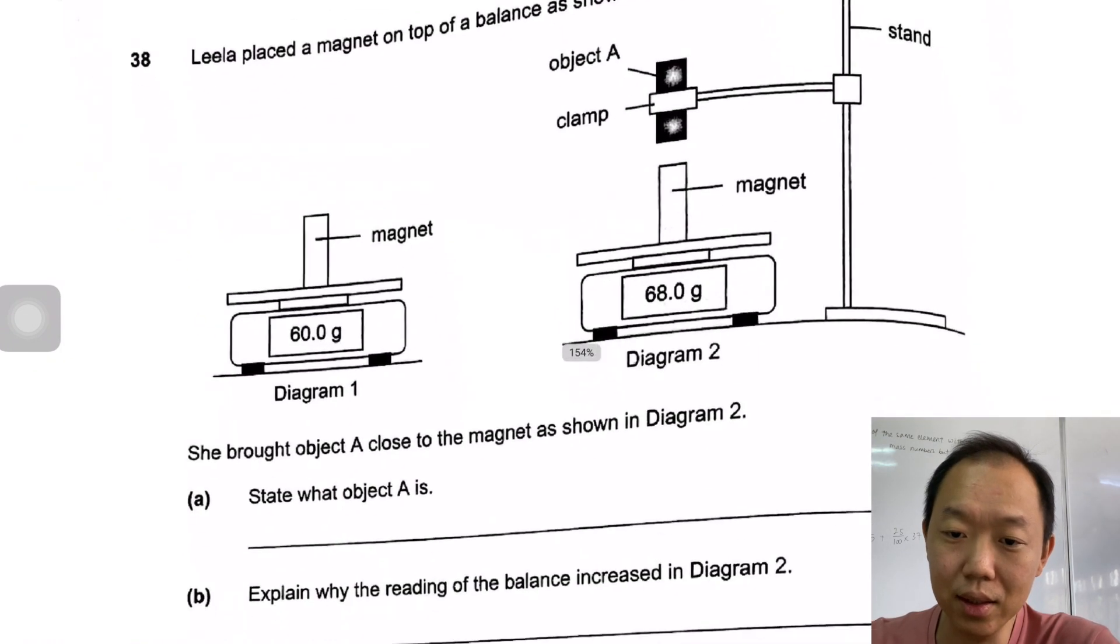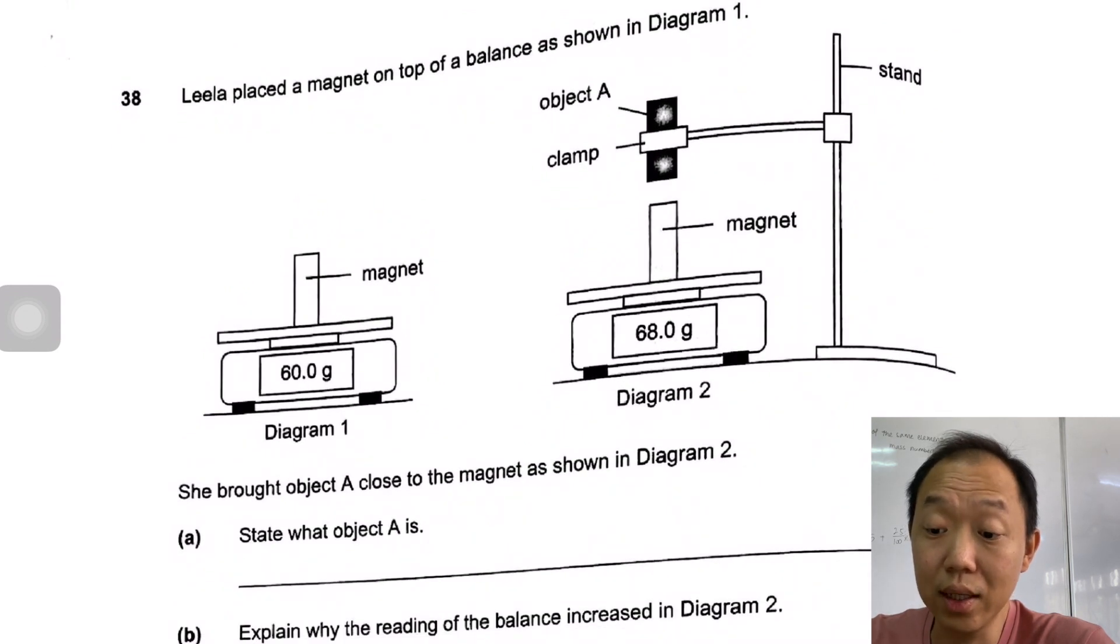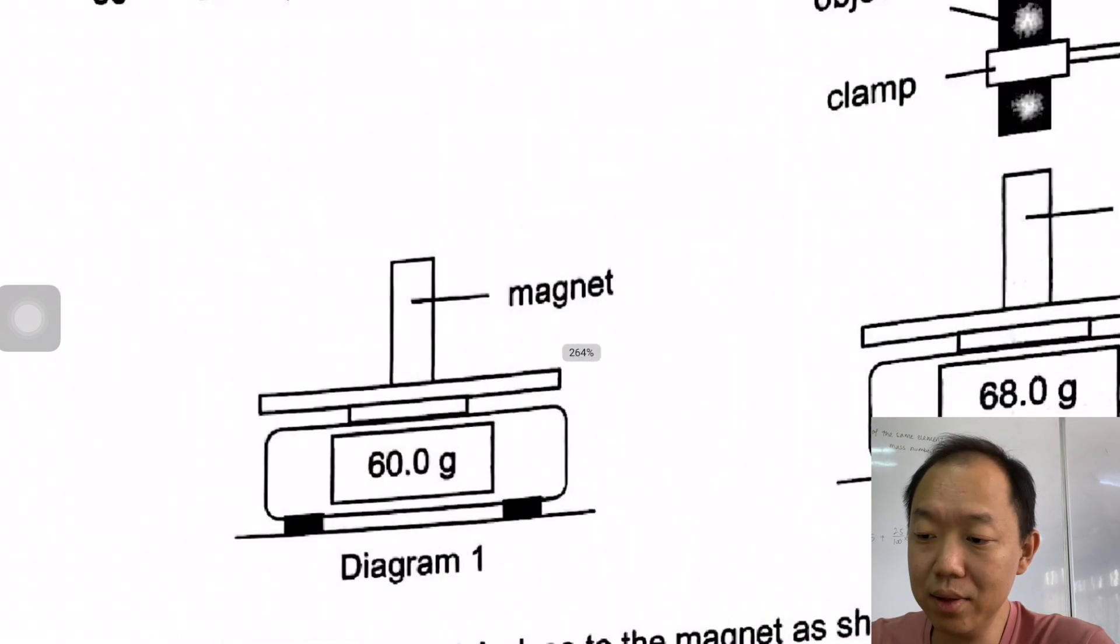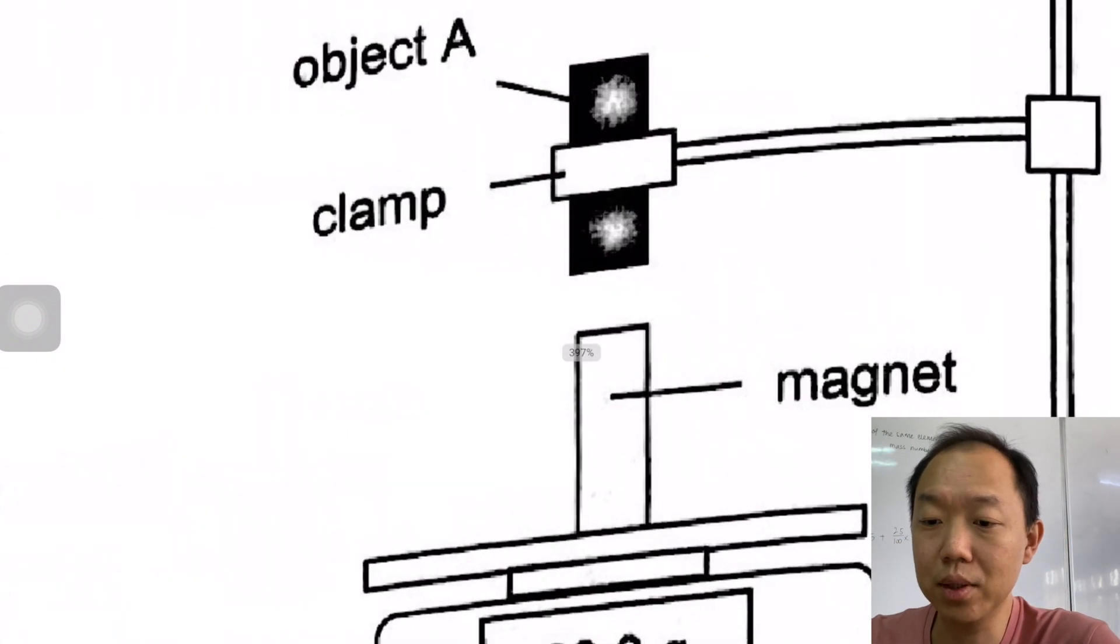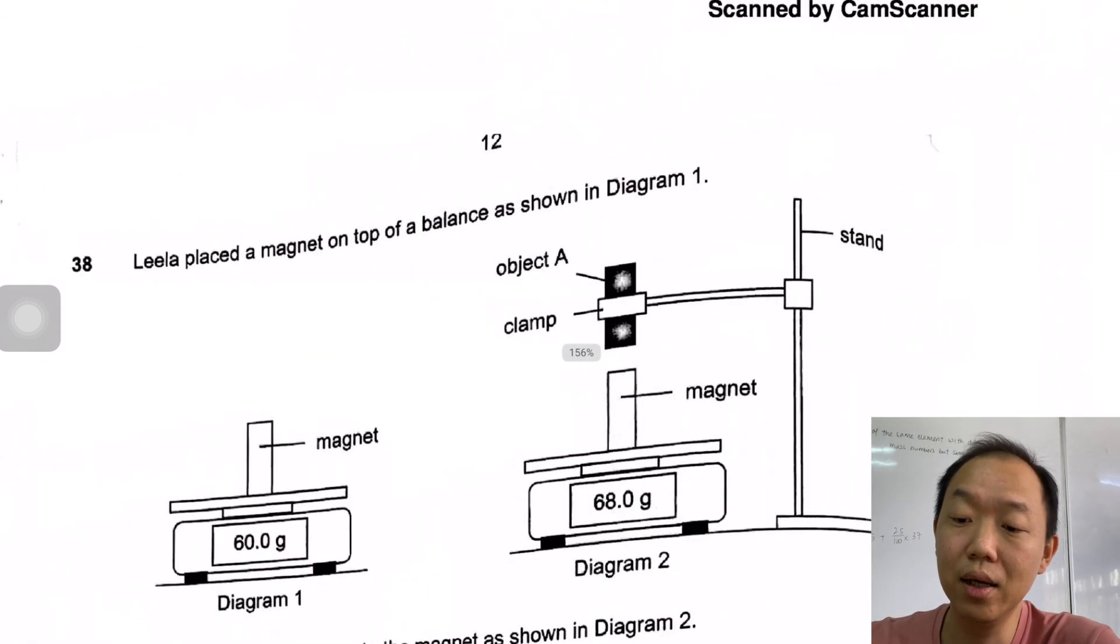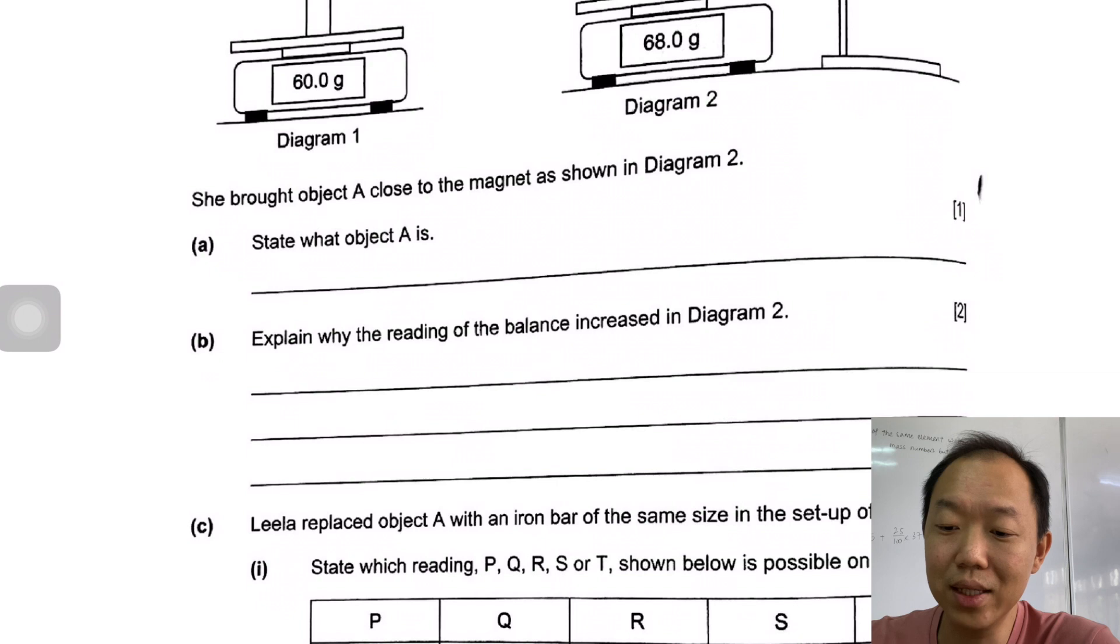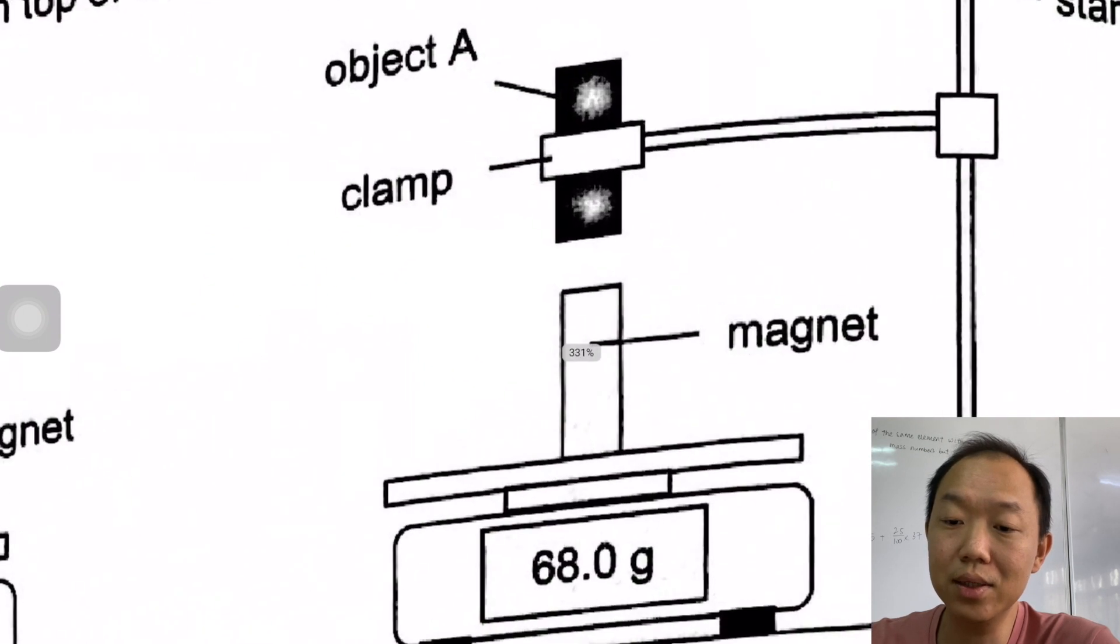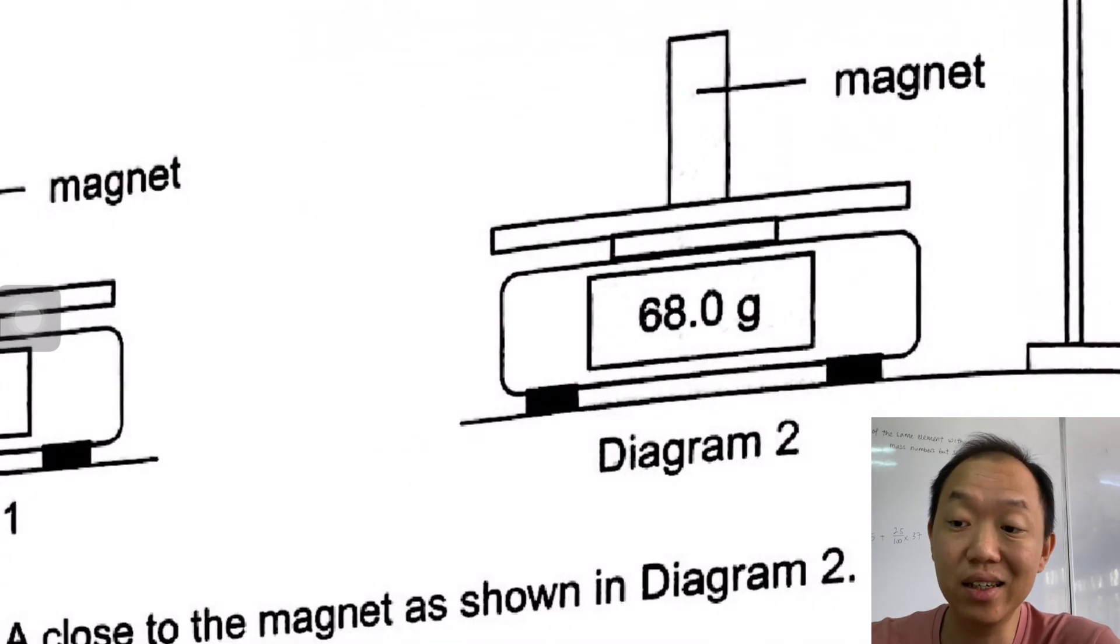Leela placed a magnet on top of a balance as shown. She brought object A close to the magnet as shown in diagram 2. At first it is 60 grams, then after that it became 68 grams. That means there is an increase in the weight. Now the only way for the weight to increase is because there is repulsion here. That means object A is repelling the magnet. If object A can repel the magnet, you need to know that it has to be a magnet. Explain why the reading increased in diagram 2. The reading increased because there is a repulsion force - there is a force pushing the magnet down, therefore this increased.